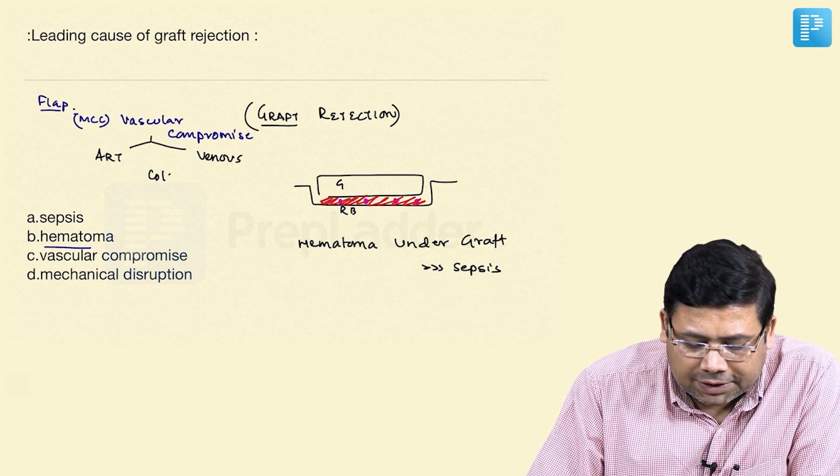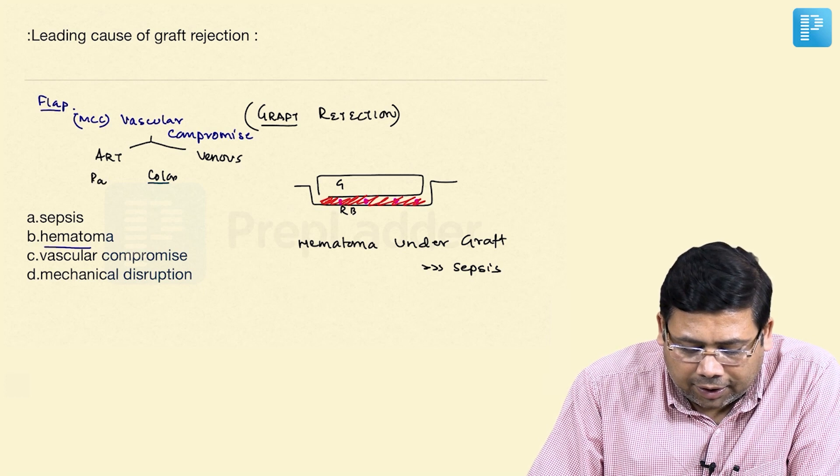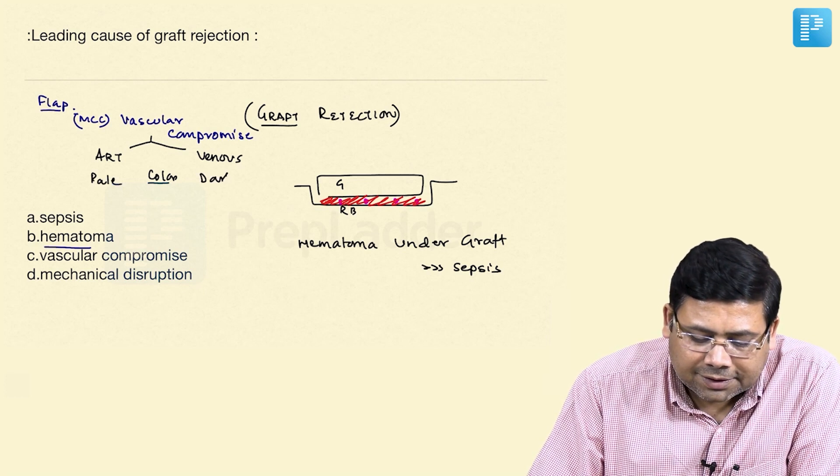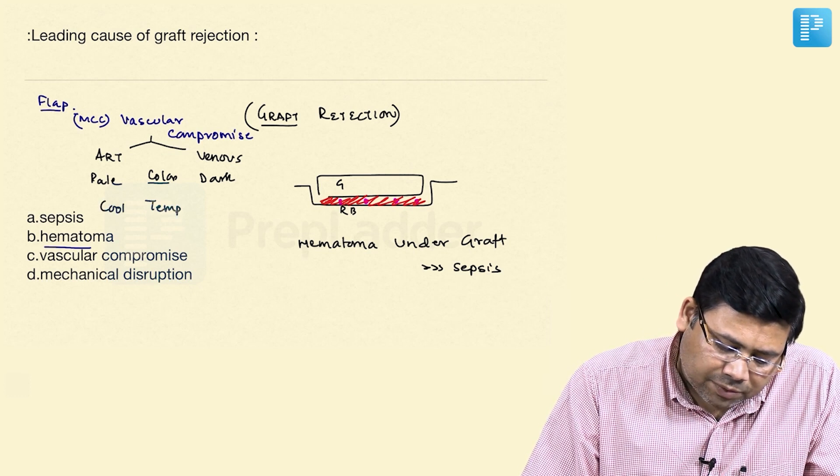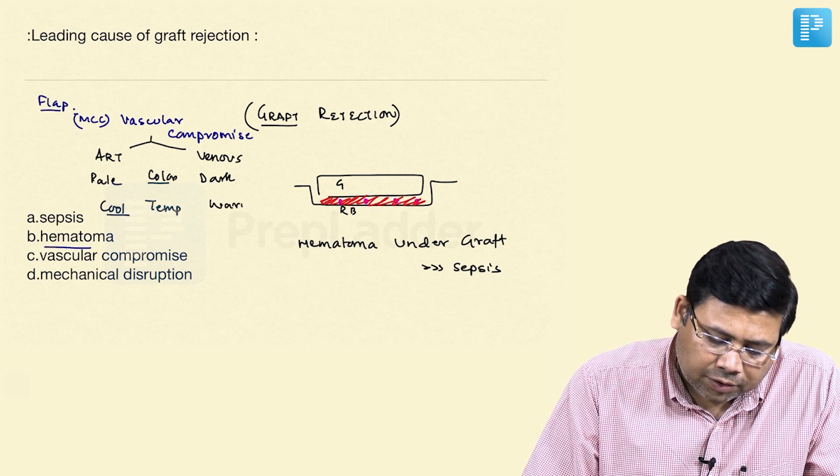How do you get to know just by looking at the color? The arterial is pale, the venous is dark because it is engorged with blood. If you talk about the temperature, less blood so cool, more blood so warm.